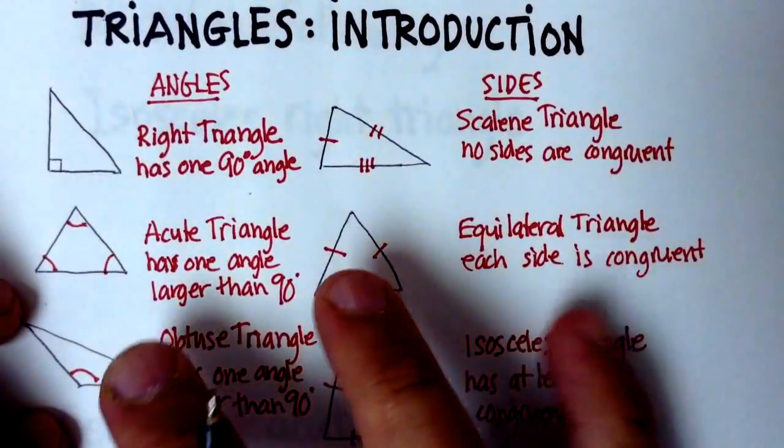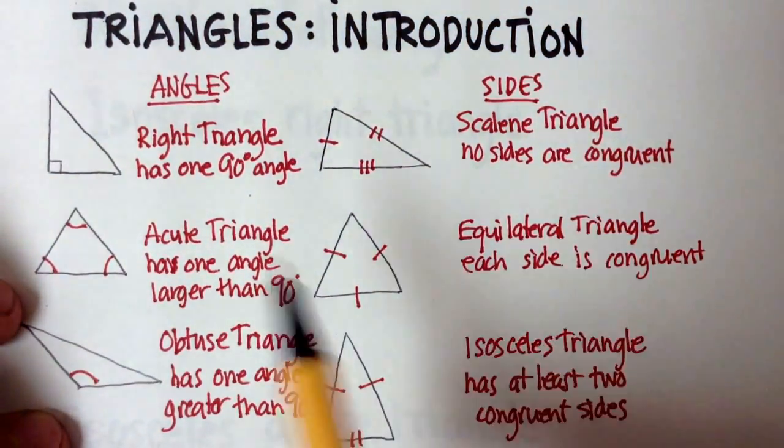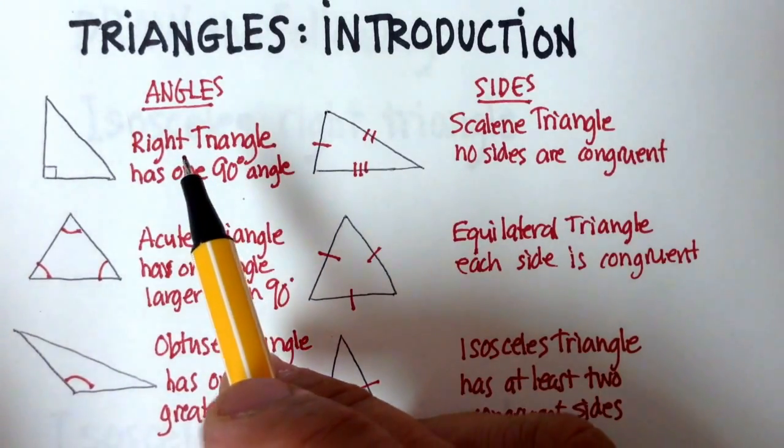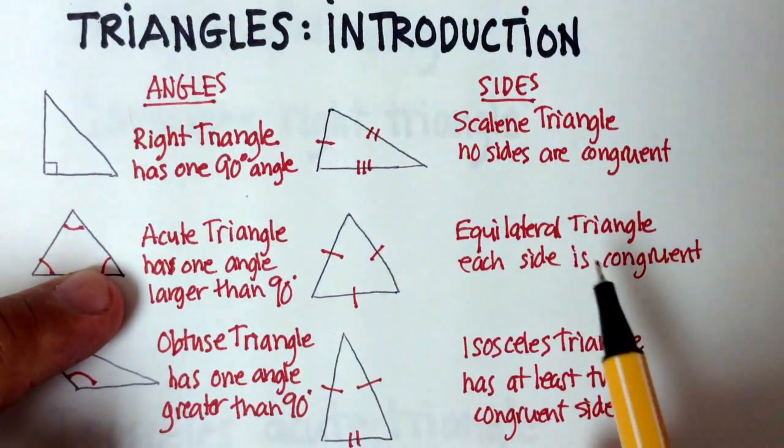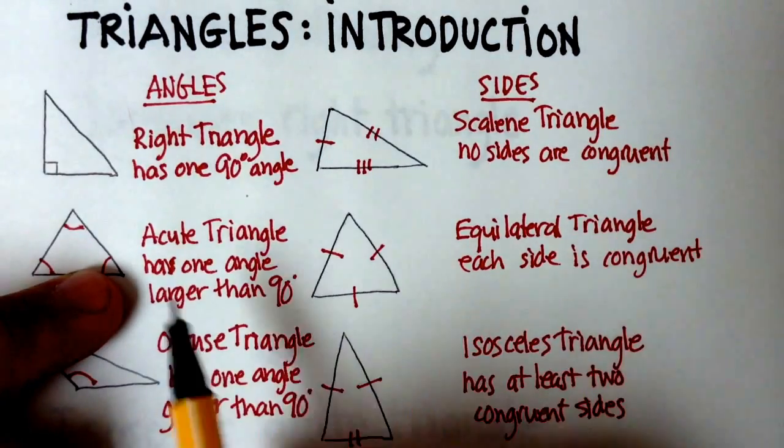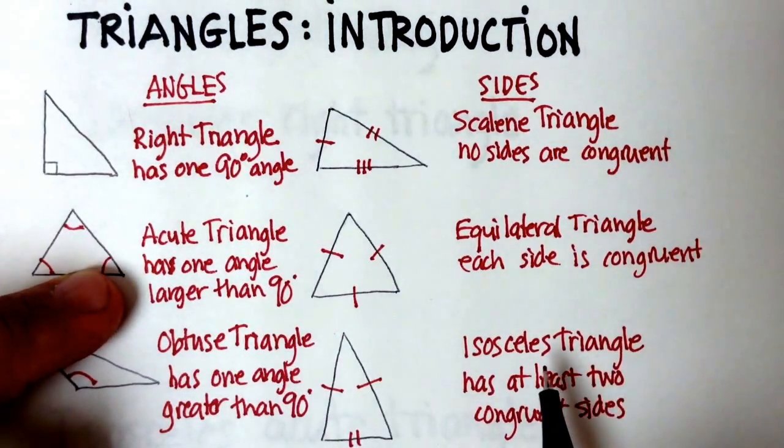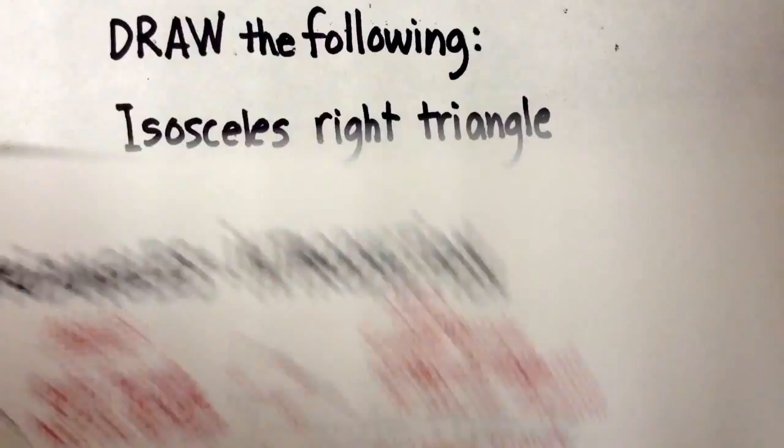Now, you can actually mix and match these. So I can actually say something like an acute equilateral triangle, or I could say an acute isosceles triangle. Let me give you an example.